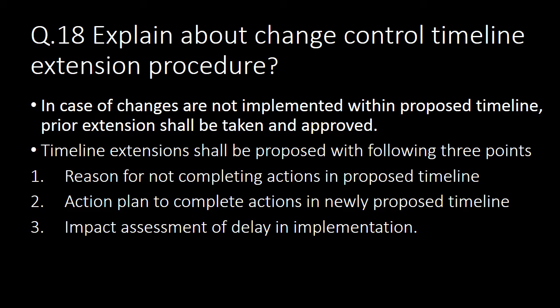Explain the change control timeline extension procedure. In case changes are not implemented within the initially proposed timeline, a prior extension shall be taken and approved. The timeline extension shall be proposed with three points: first, reason for not implementing the action in the proposed timeline; second, action plan to complete actions in the newly proposed timeline; and third, impact assessment of the delay in implementation.